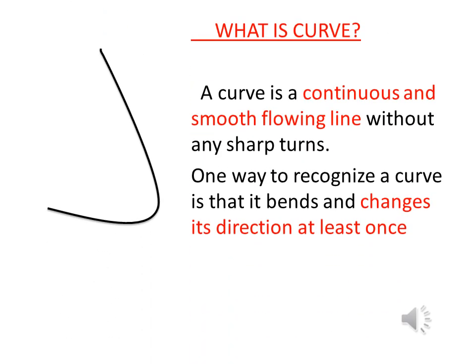Now, what is a curve? A curve is a continuous and smooth flowing line without any sharp turns. That means a curve is a line with some curvature or some bend in it — it changes its direction at least once. It doesn't matter how small that bend or curvature is; if there is some sort of curvature in a line, then it is simply a curve.